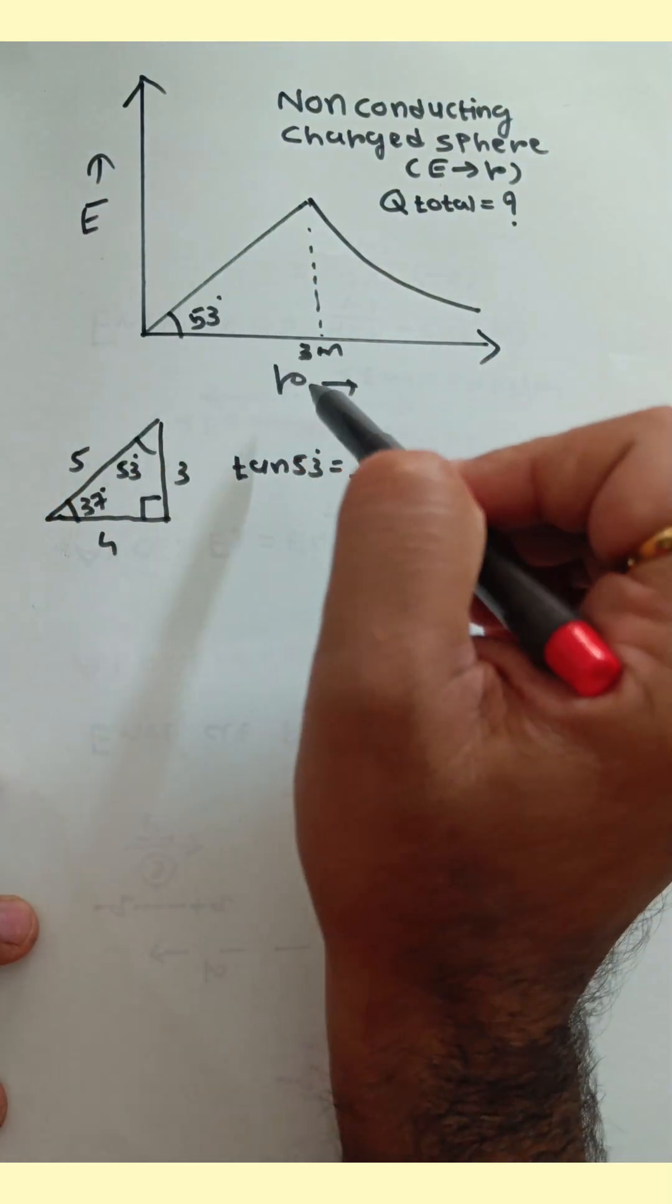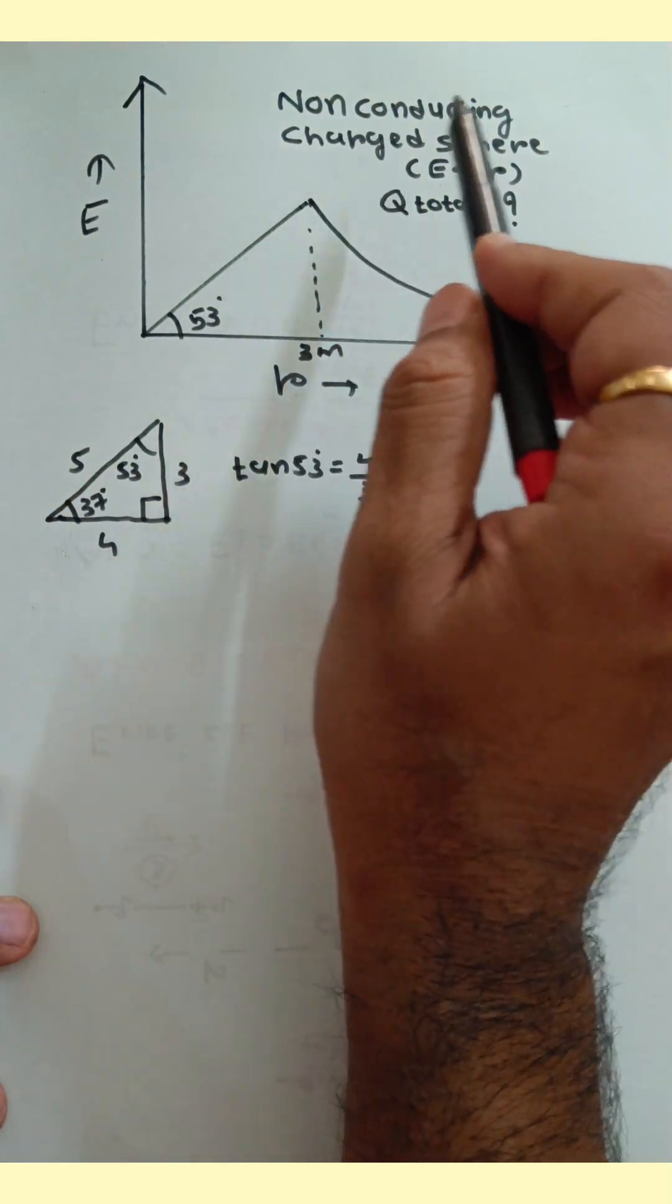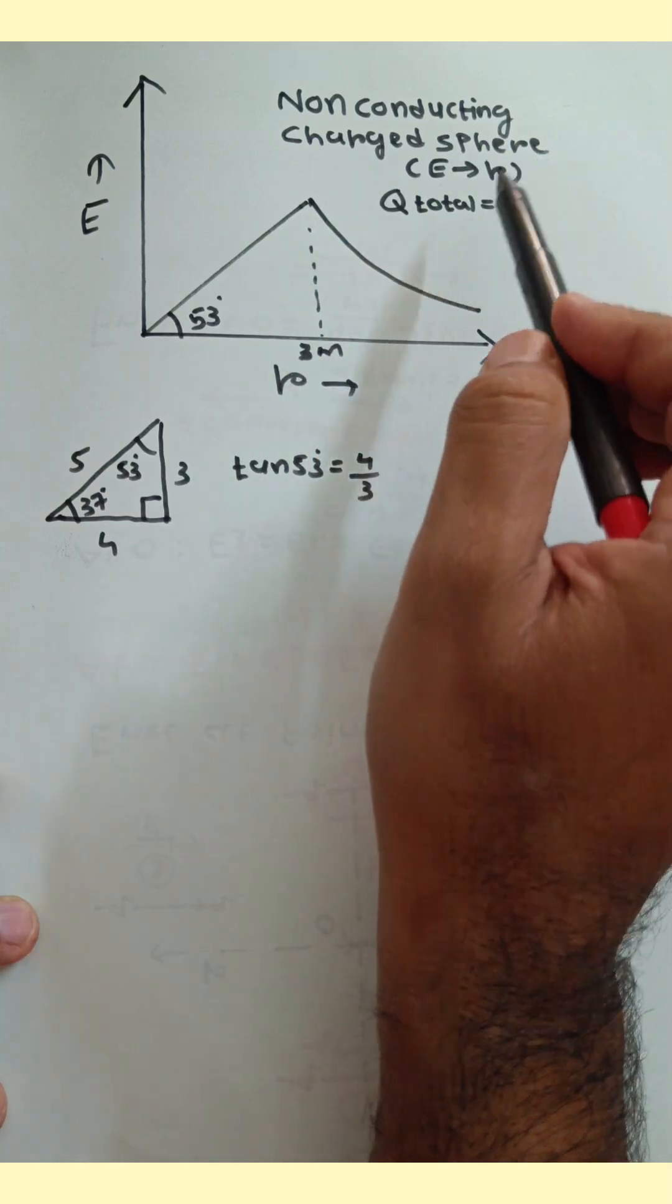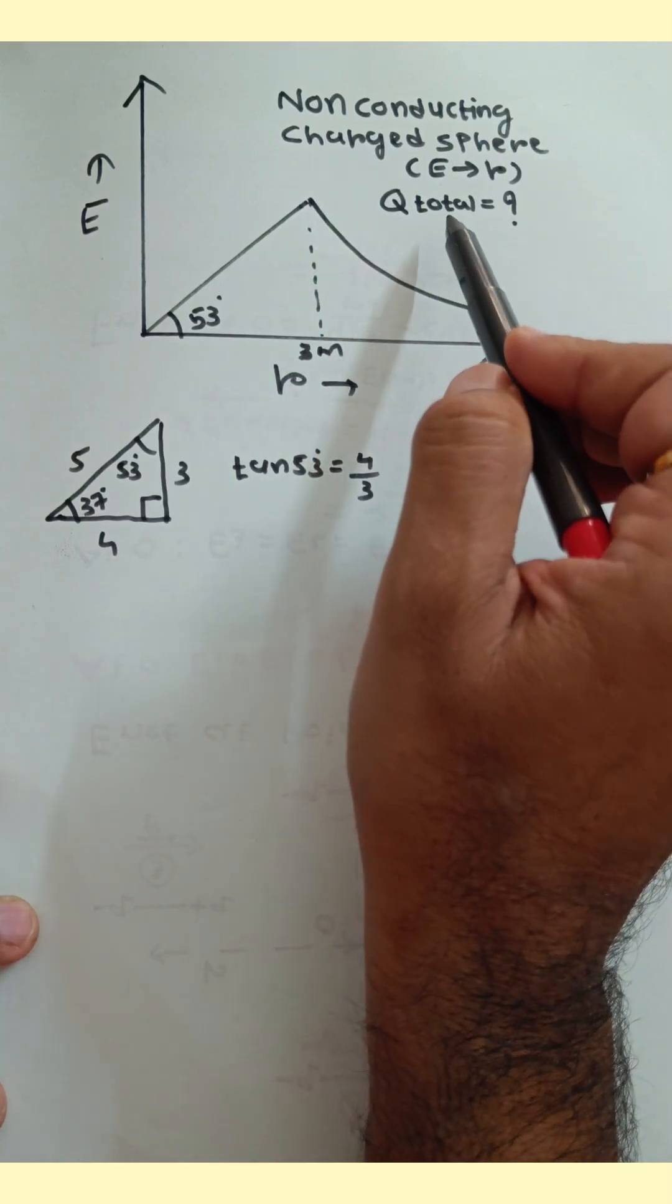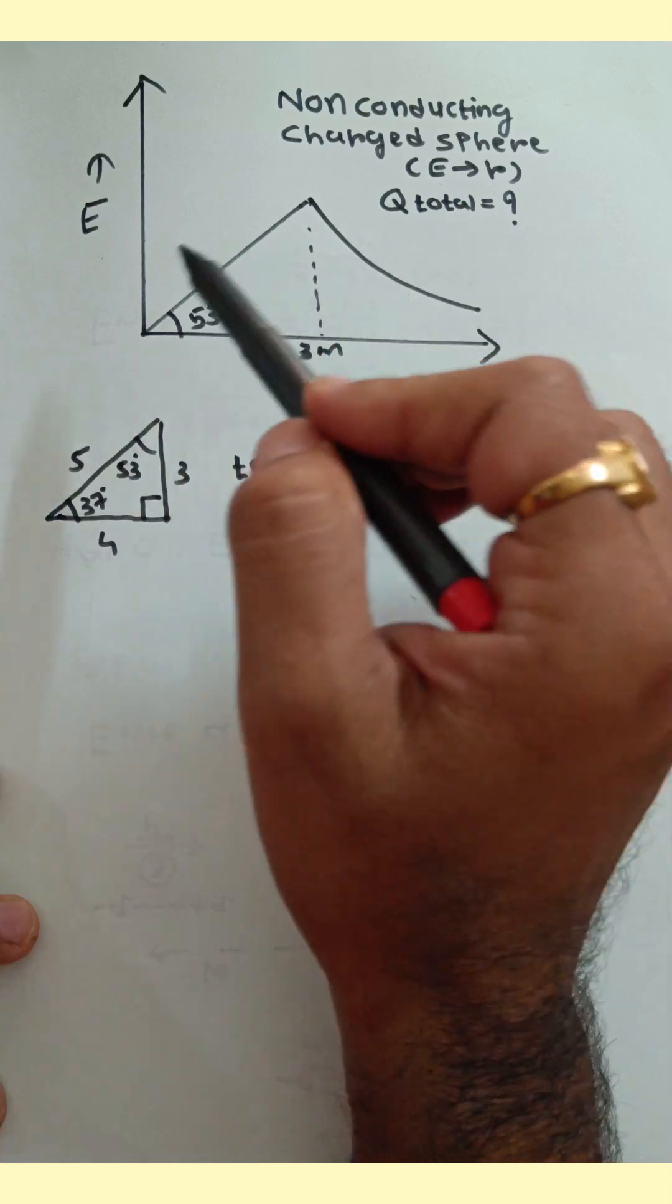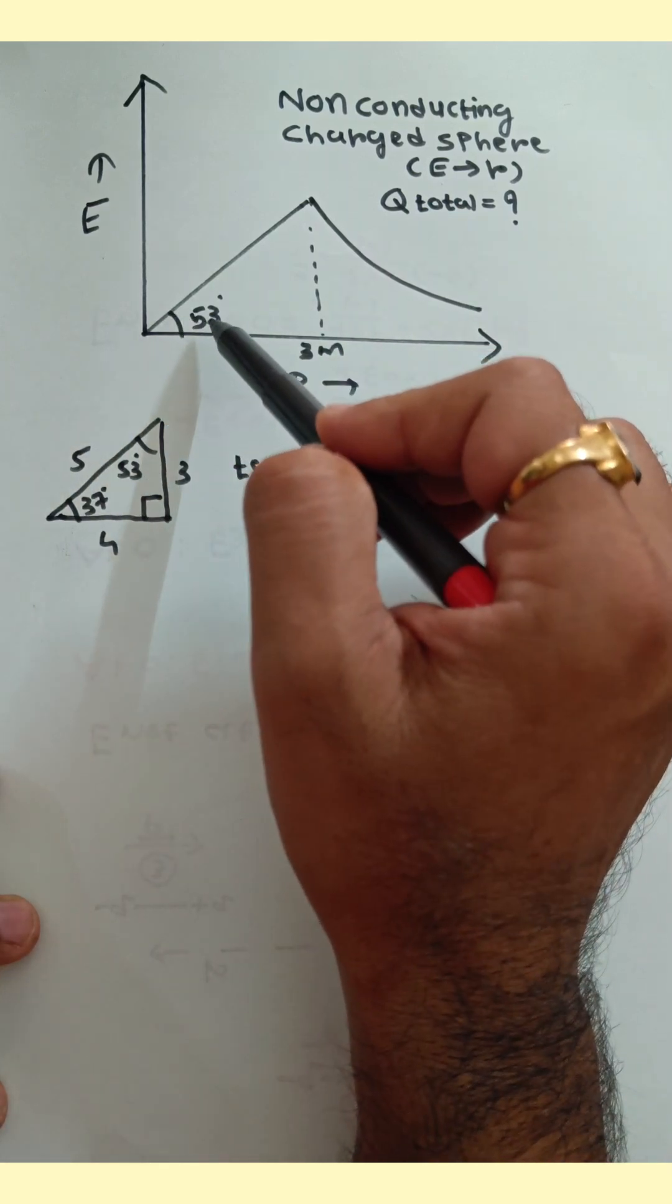Graph of electric field versus R is given for a non-conducting charged sphere. Then find out the total charge in the non-conducting sphere. Now see the diagram here. Angle is given 53 degrees.